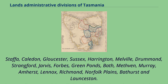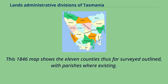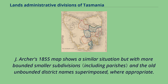An 1846 map shows the 11 counties thus far surveyed, outlined with parishes where existing. Jay Archer's 1855 map shows a similar situation but with more bounded smaller subdivisions and the old unbounded district names superimposed where appropriate.